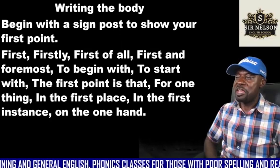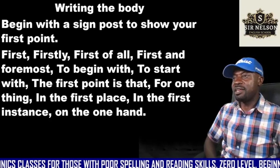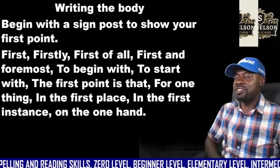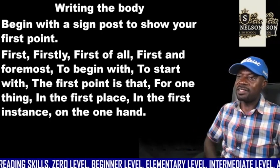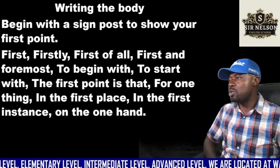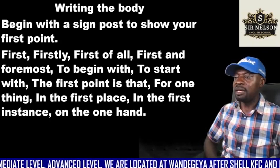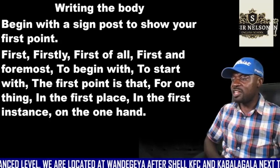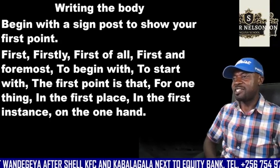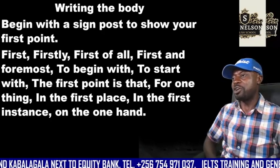Next, writing the body. After the introduction, we go to the body. In the body, you begin with a signpost to show that this is your first point. Any of these can work — firstly, first of all, first and foremost, to begin with, to start with, the first point is that, for one thing, in the first place, in the first instance, on the one hand. These are signposts warning the reader that your first point is coming.